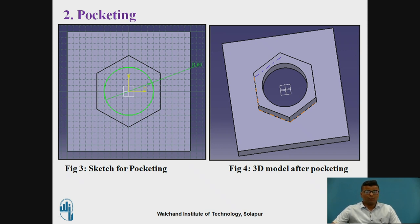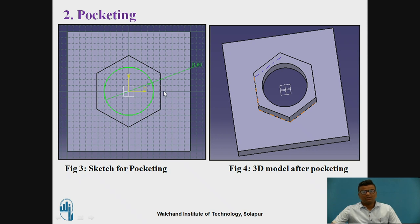Pocketing. In the last feature we discussed padding — padding is actually adding the material. Now the second part is pocketing, where we have to remove the material from a particular surface. This is the earlier surface, that is, the rectangle and the hexagon. We can provide a hole with the help of pocketing. An 80mm diameter circle is created here. After that we provide the depth of cut — that is, throughout. This will be our 2D sketch required for pocketing. Using the pocketing tool inside the sketch base feature, we can create the pocketing for the hole. This will be the 3D model after pocketing, where we are subtracting or removing the material from the surface.